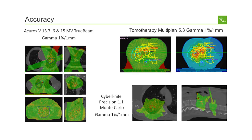The accuracy of the system has been validated against a number of established treatment planning systems. One study was performed against Varian's latest edition of the accurate dose computation engine, and it turned out that both algorithms deliver very comparable results. Differences could only be found when a gamma evaluation of 1% / 1 mm was applied, and the results have been recently published in Medical Physics.